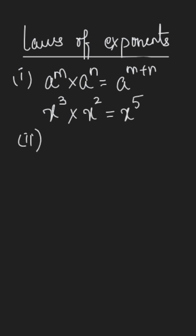The next rule is the quotient rule which says a power m divided by a power n will be equal to a power m minus n, which means if you have the same bases and are in division you can simply subtract their powers.